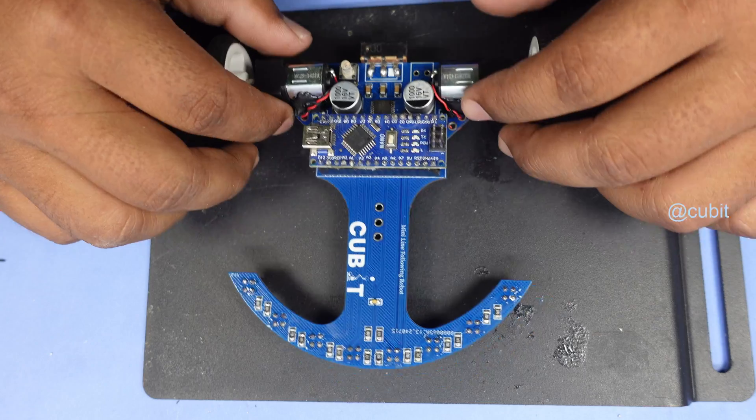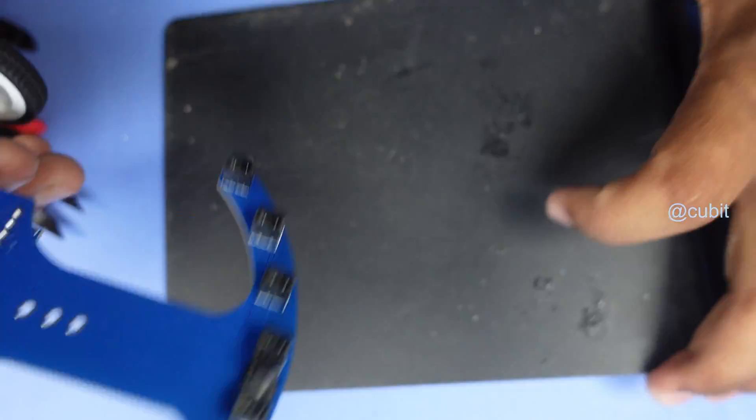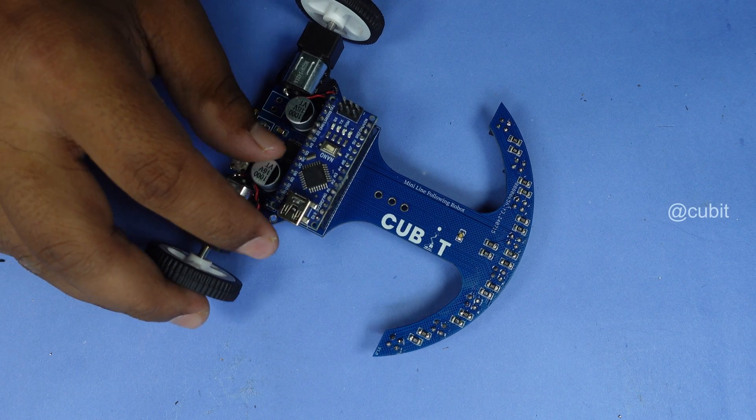With that, the assembly is complete. Our mini line following robot PCB is ready for the next step. Stay tuned for more in this series as we move forward with testing and final adjustments.